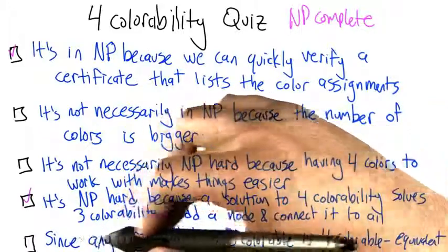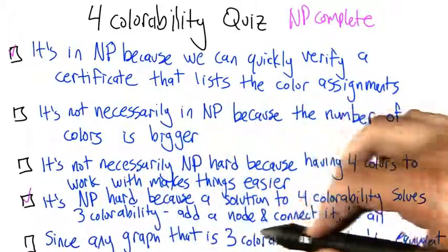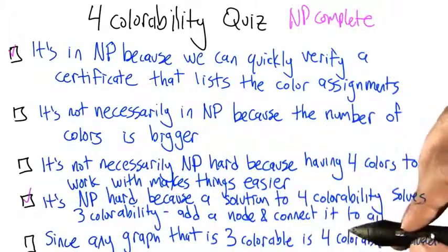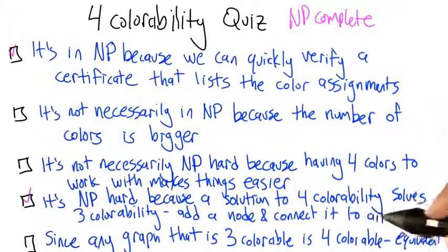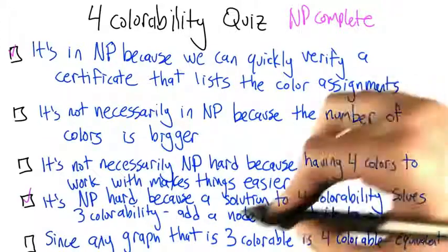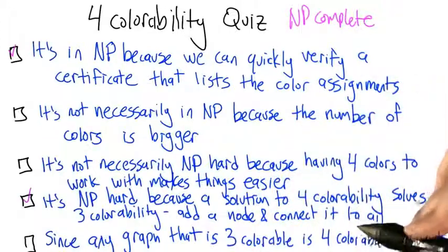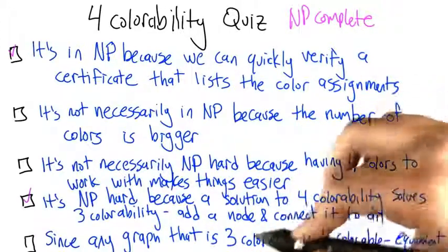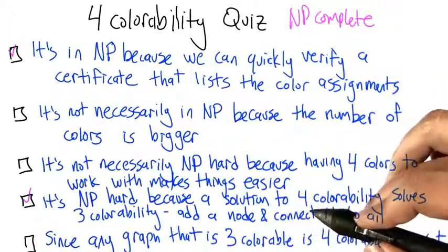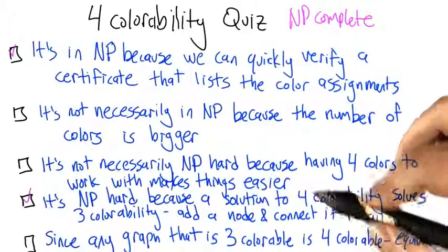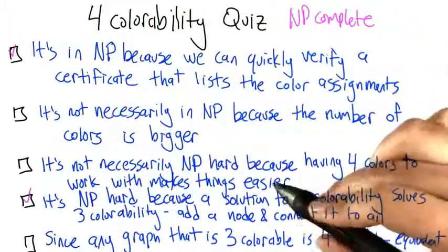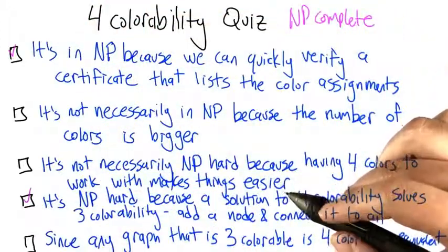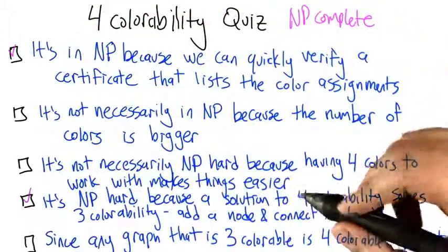Since any graph that is 3-colorable is 4-colorable, that's true. But that doesn't make them equivalent, because it would also have to go the other way — every 4-colorable graph would also have to be 3-colorable, and that's just not true. So this is actually the proof that 4-colorability is NP-complete.